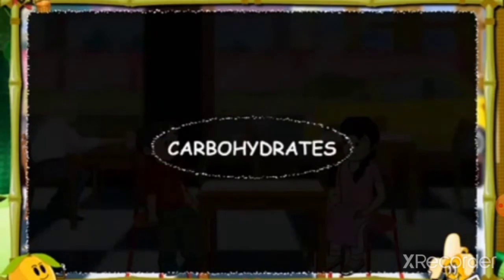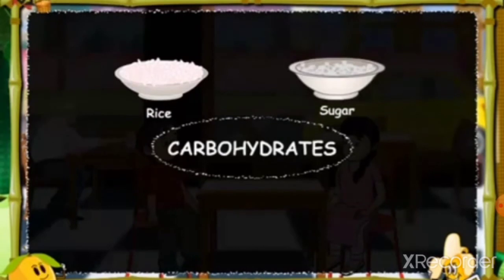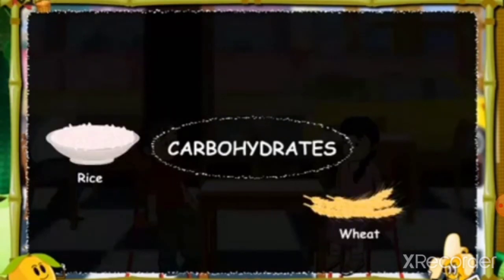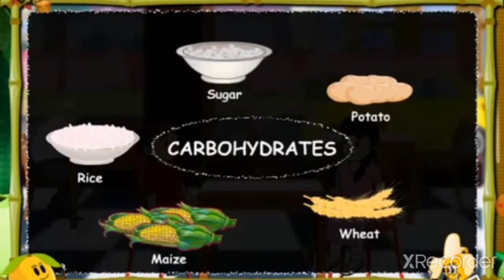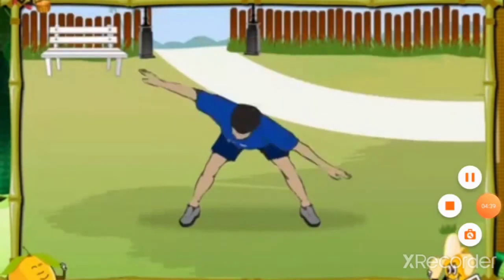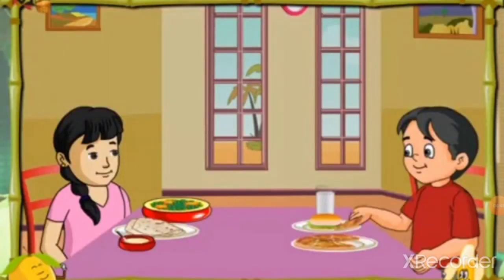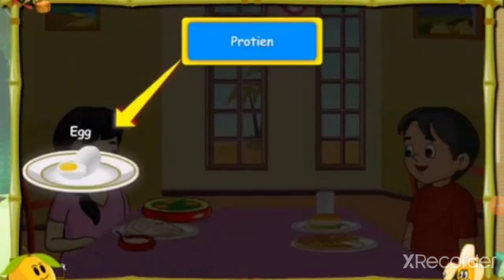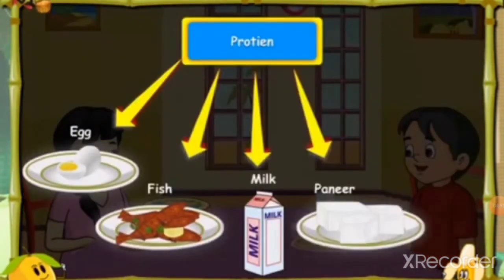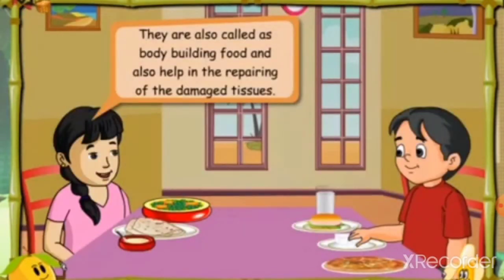Sources of carbohydrates are rice, sugar, wheat, maize and potatoes. They provide energy for doing different activities. Proteins are required for proper growth. Sources of proteins are egg, fish, milk, paneer and pulses, and are also called body-building food.